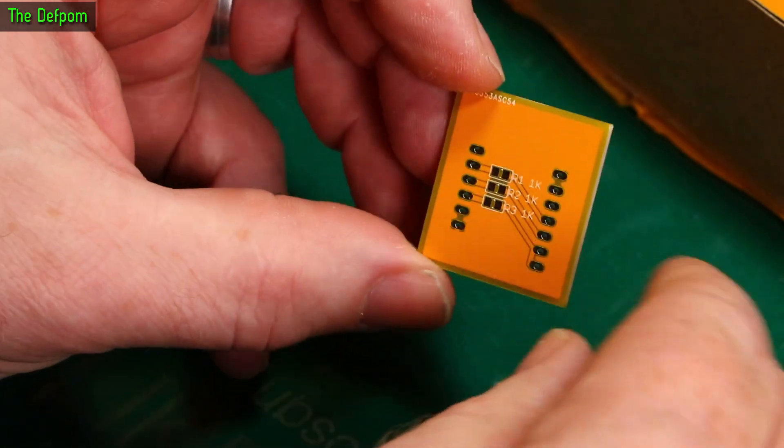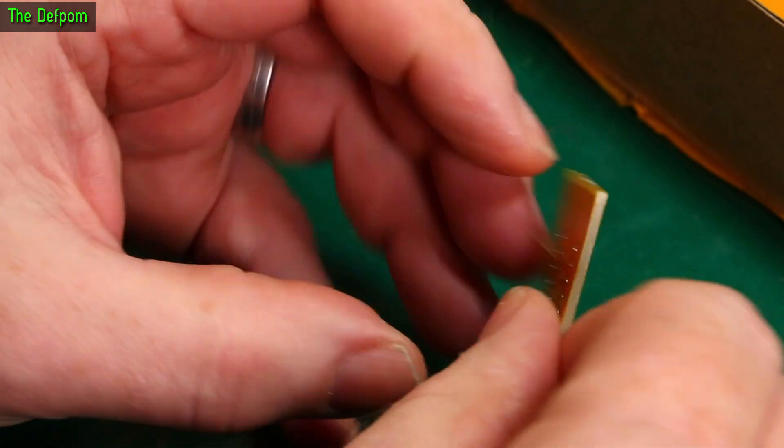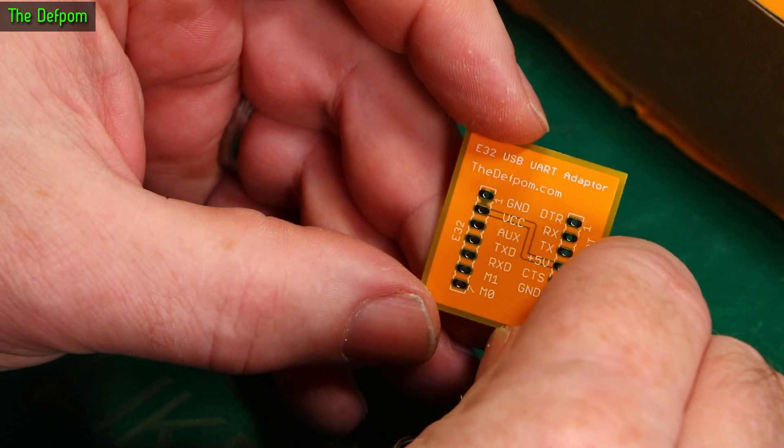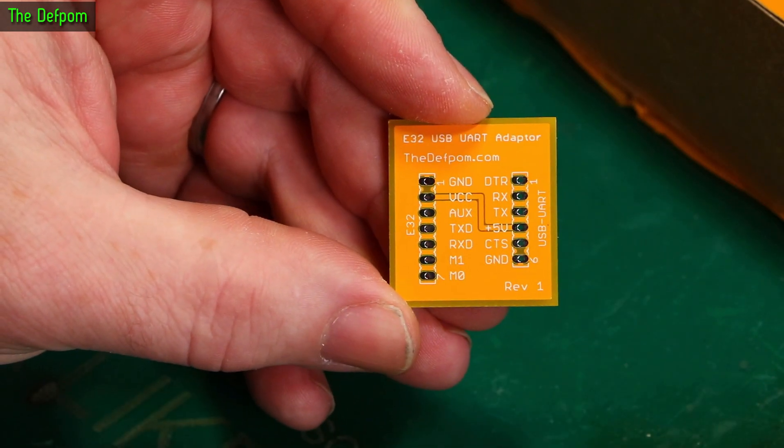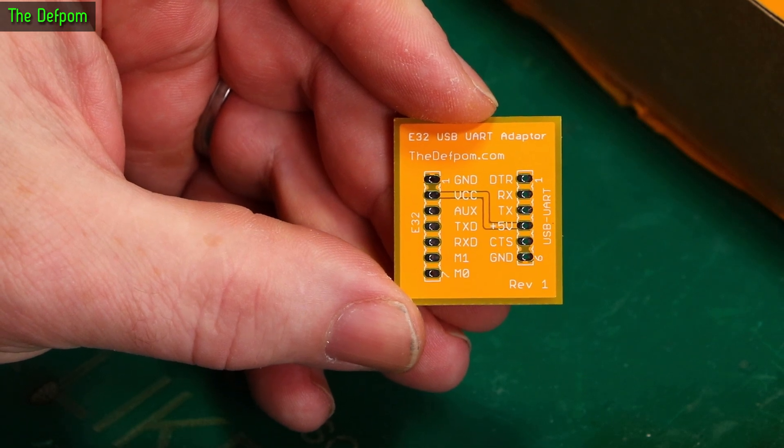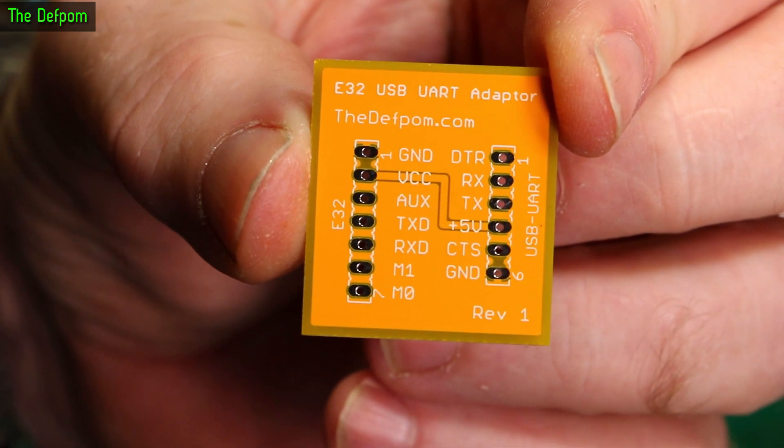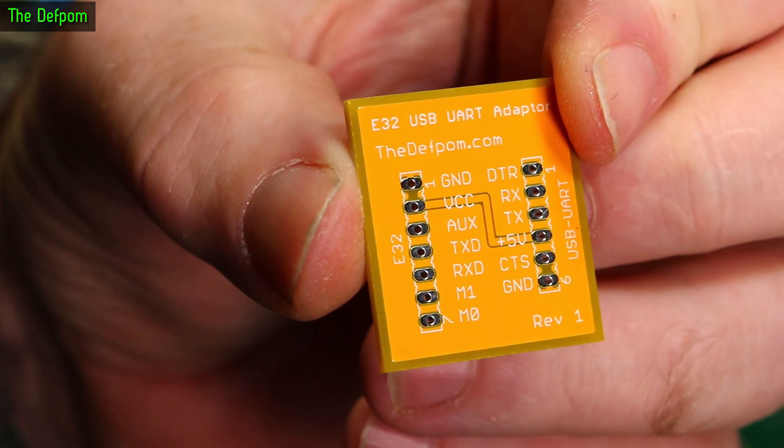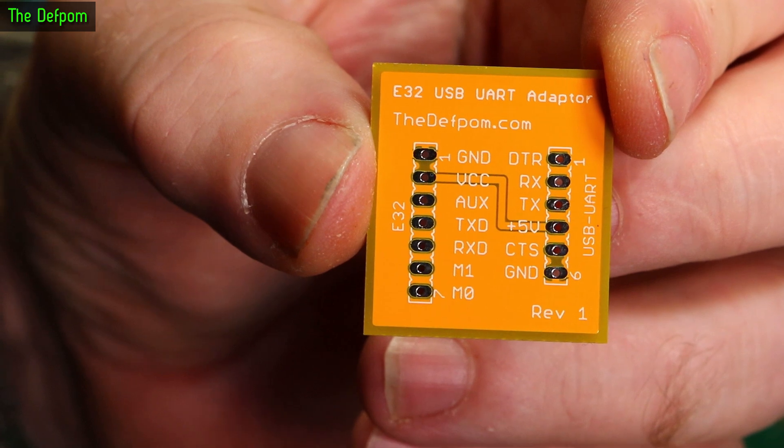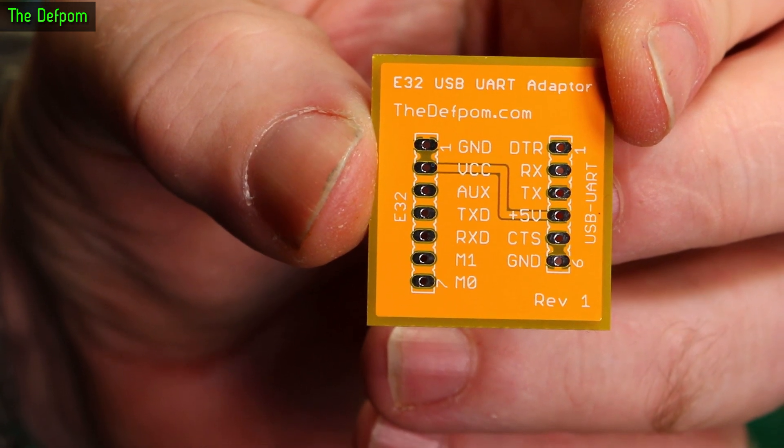Because I looked at it and thought, oh yeah, that looks okay. Nothing really to check there. Anyway, I should have done an electrical check because I made a mistake. Can you spot it? It's on this side? No? So this is as close as I can get. Can you see it now? No? Yeah, it wasn't obvious to me either.